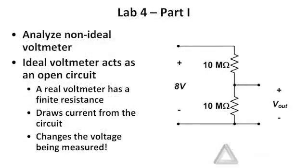In part one of lab assignment four, we're going to analyze a non-ideal voltmeter. Ideally, a voltmeter acts like an open circuit. It does not pull any current from the circuit that it is applied to. However, any real voltmeter has a finite resistance. Typically, that internal resistance of the meter is very high. And specifically, you want that resistance to be high compared to the resistances in the circuit that you're measuring.